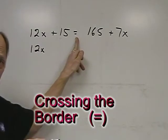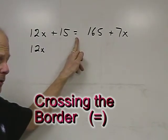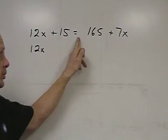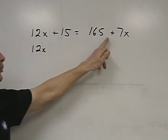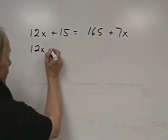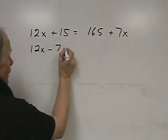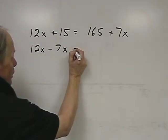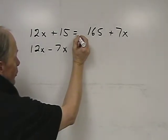And the rule is whenever you cross the border one way or the other way, your sign changes. So if we have plus 7x here, it's going to become minus 7x on the other side. So I can write that in as minus 7x. Put the border or the equal sign here.